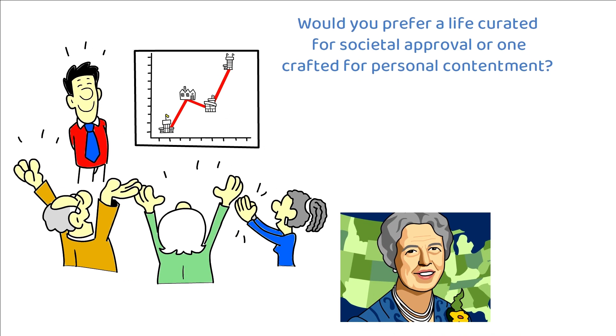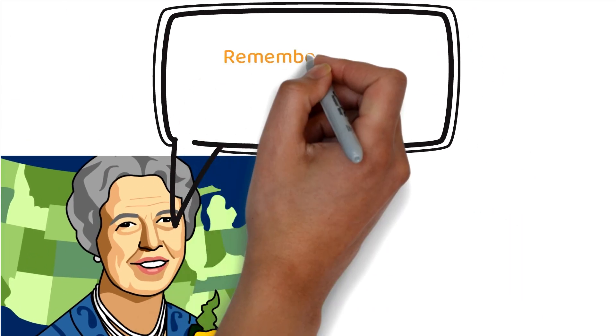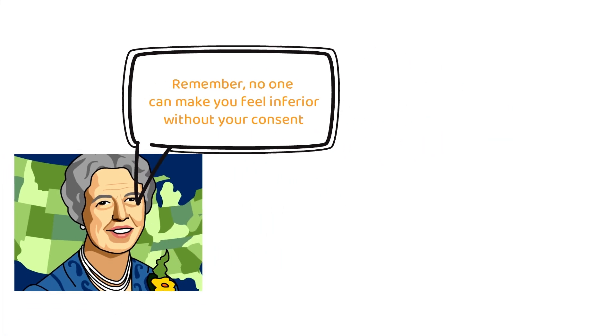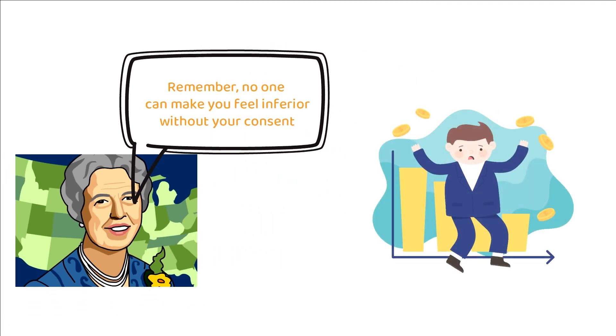Eleanor Roosevelt aptly said, Remember, no one can make you feel inferior without your consent. It's empowering to know that societal standards don't determine your financial worth, but by your own values and aspirations.